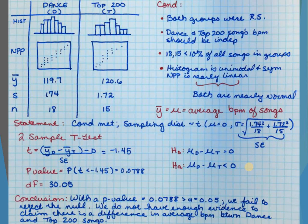Please make sure I still see some folks who are using the wrong notation. This has to be mu — not y-bar. The hypothesis test is trying to learn about what's true about the population, not about your sample. We know what's true about your sample. So, conclusion with the p-value: if p is greater than alpha, we fail to reject the null. We do not have enough evidence to claim that there's a difference in average BPM between dance and top 200 songs.